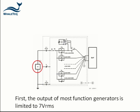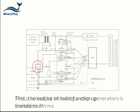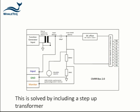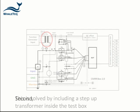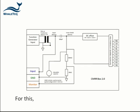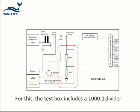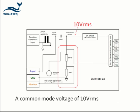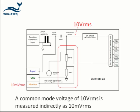First, the output of most function generators is limited to 7 volts RMS. The CMRR box includes a transformer to step up to 20 volts as required by the standard. Second, at mains frequency, 100 pF capacitors are very high impedance, which means that it's very difficult to directly measure the 10 volts. For this, the CMRR box includes a special 1000-to-1 divider, so that an output of 10 volts can be measured indirectly as 10 millivolts.